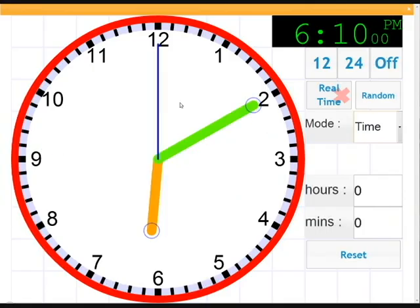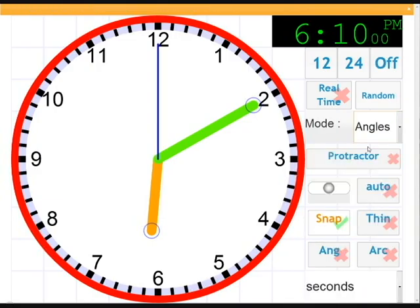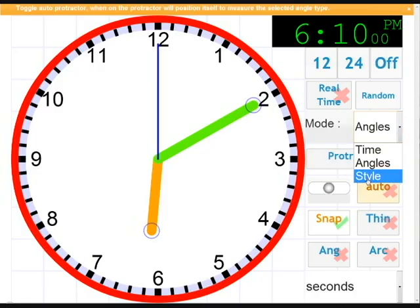So the next control to look at is a select. This is used to select different modes. So we have a choice of angles or style. That's angles. Click it again. I'll select style and you'll see the actual overall controls change below.